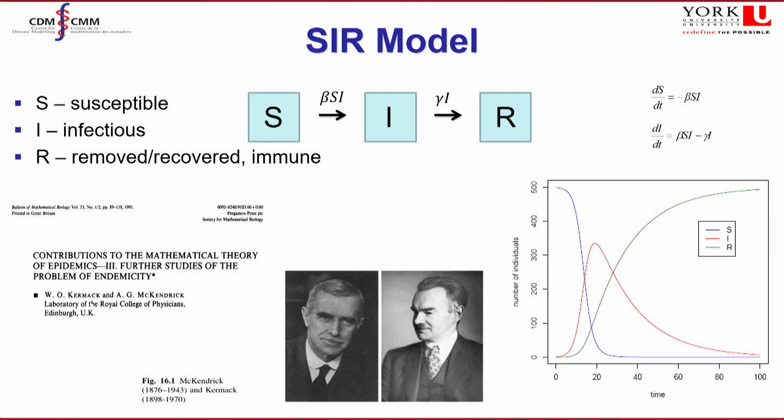In the basic SIR model we're ignoring many characteristics of the population and health status. We can incorporate treatment, vaccination, waning immunity where immunity can decay over time, age, immune system status, ethnicity, sex, and so on. So this model can get a lot more complex over time.